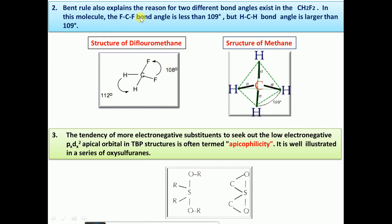The second application of Bent's rule explains why two different bond angles exist in the same molecule. In difluoromethane (CH2F2), although it has tetrahedral geometry with a general bond angle of 109°, the F–C–F bond angle is less than 109° and the H–C–H bond angle is greater than 109°. This is because as the percentage of s-character increases, the bond angle also increases, and vice versa.